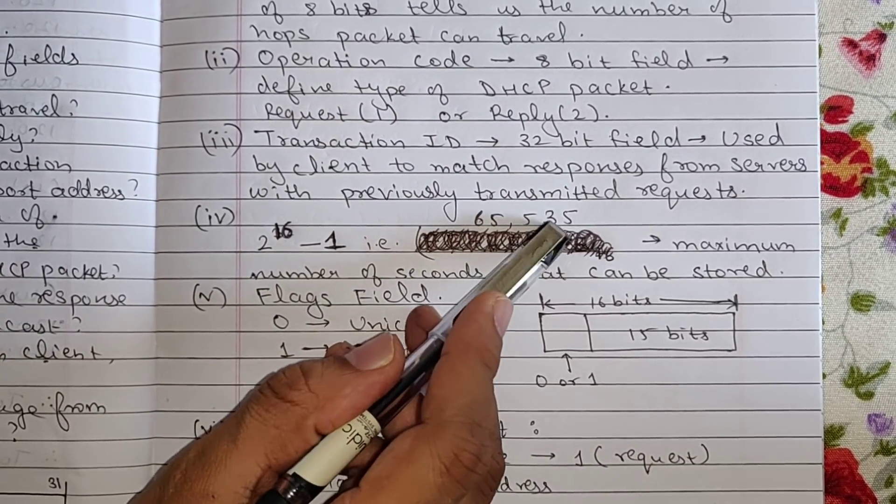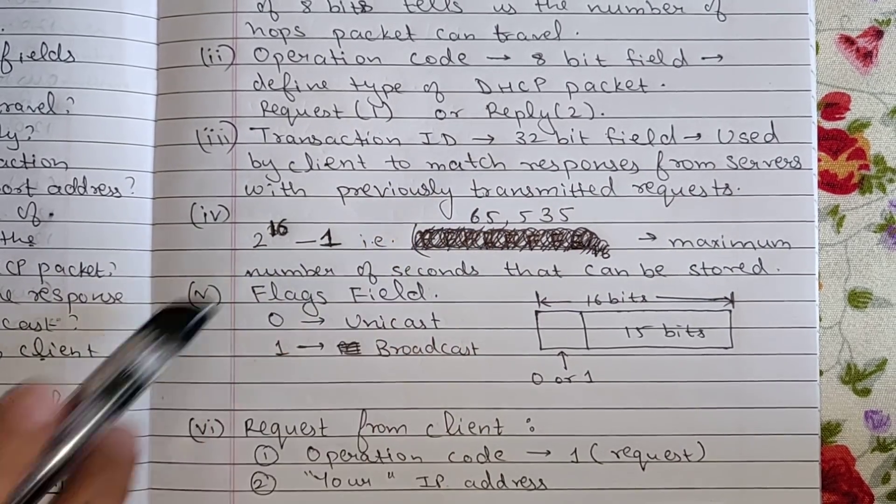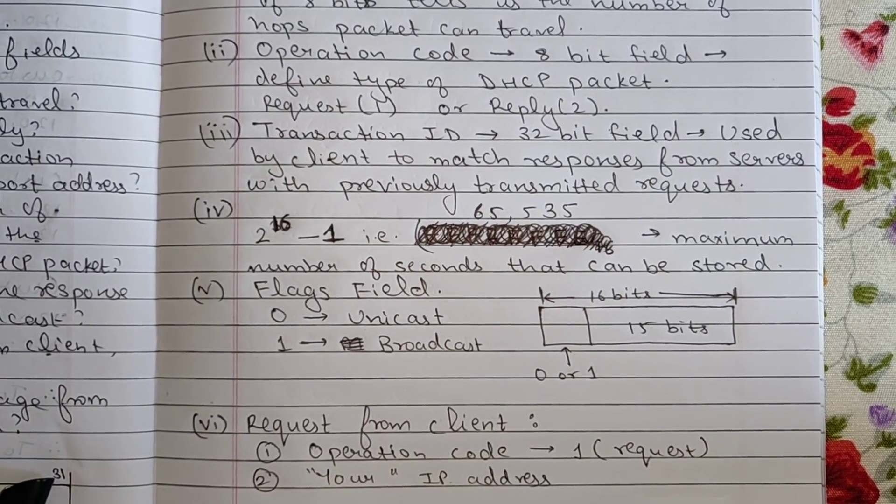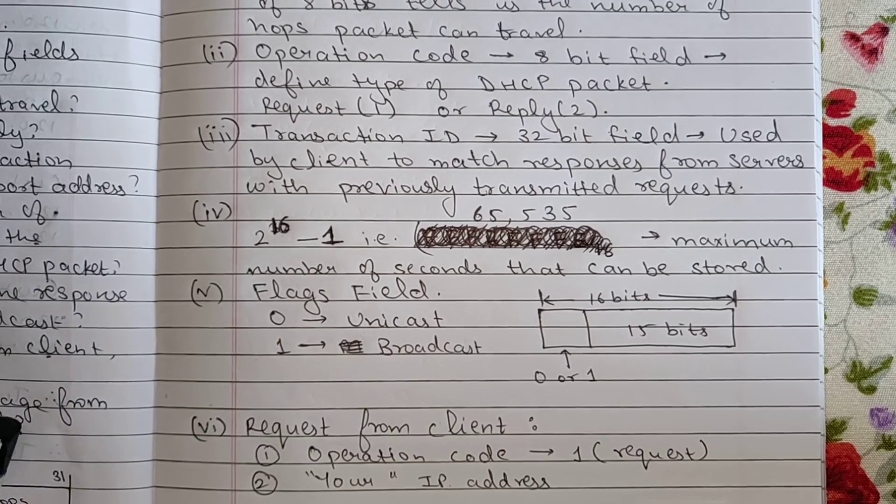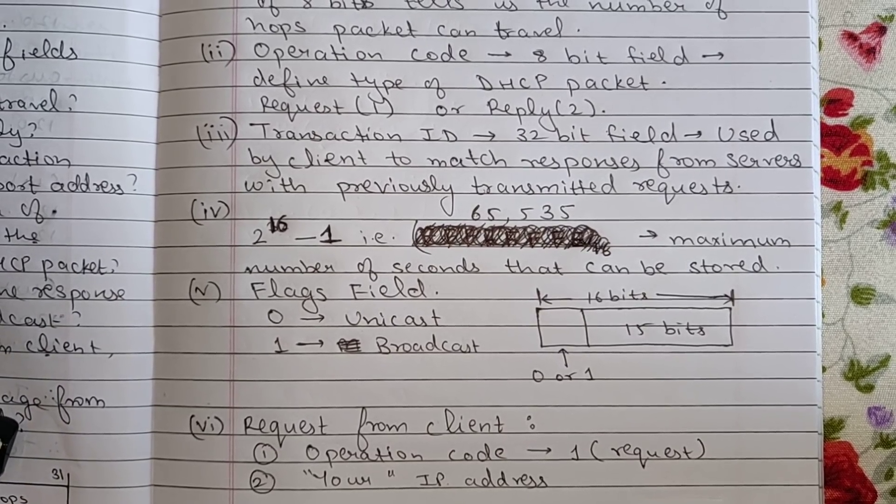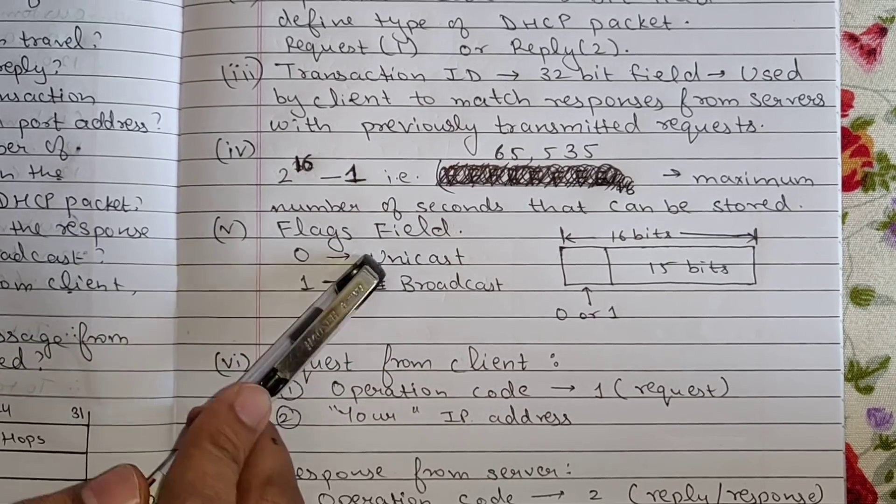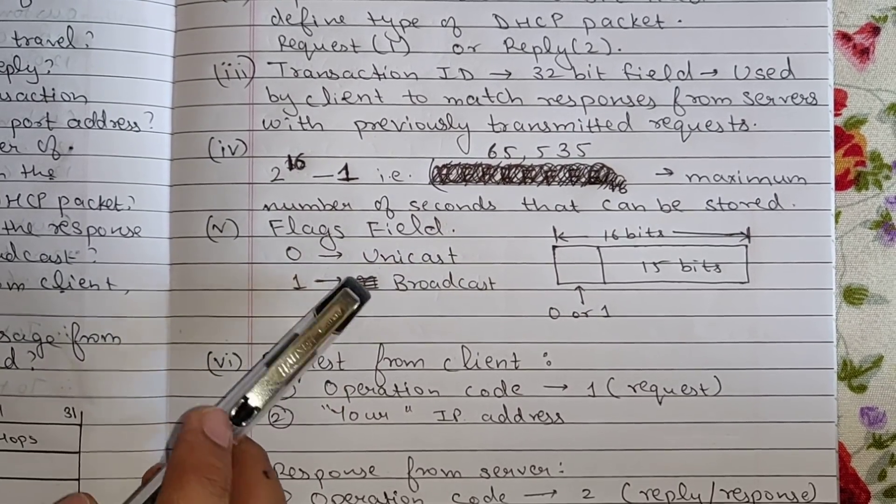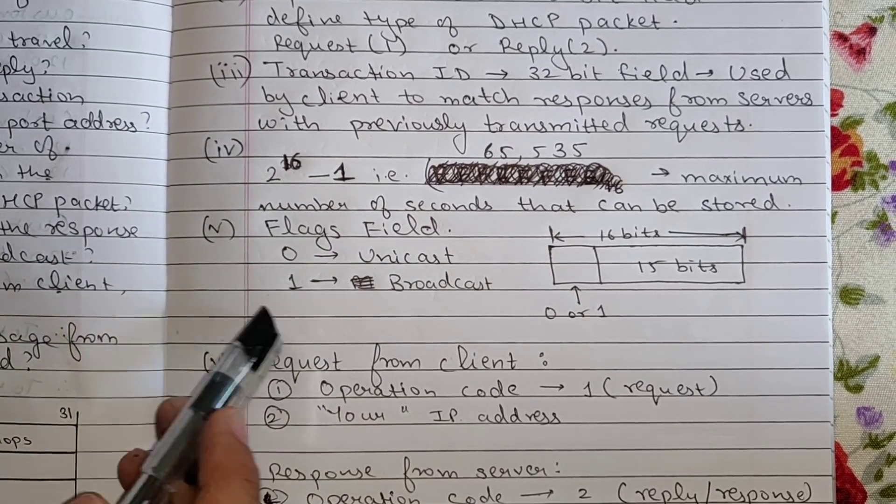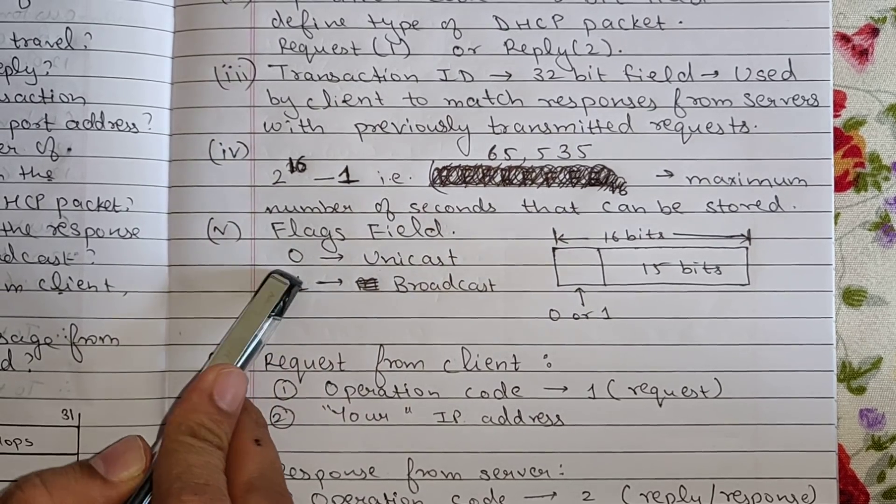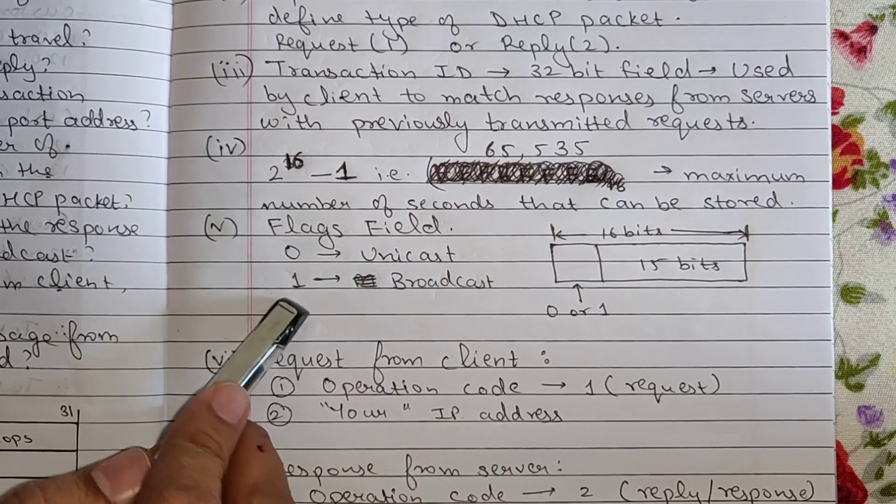So that means we can have 65535, that is the number that will be the maximum number of seconds that can be stored. The next is which field determines the response from server is unicast or broadcast. Then the answer for this is that the flags field, it determines whether the response is unicast or broadcast.